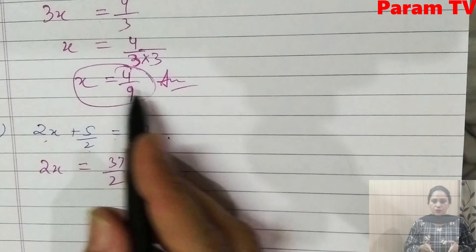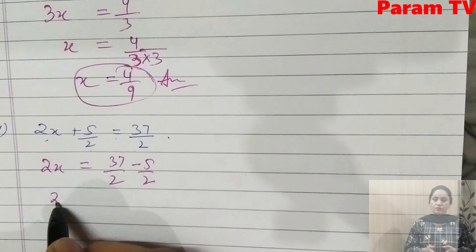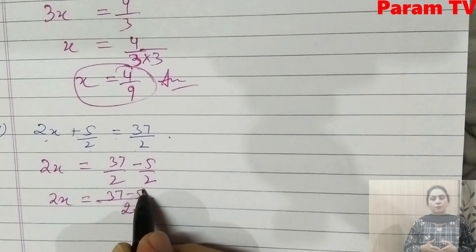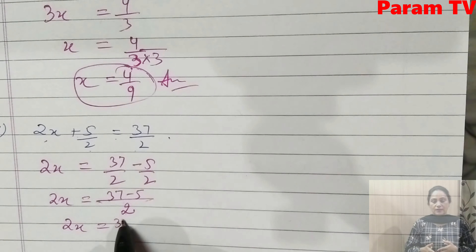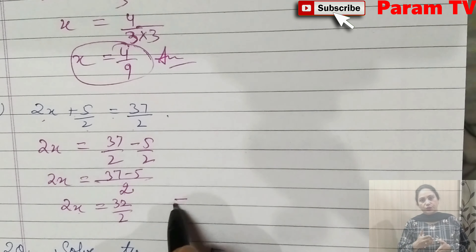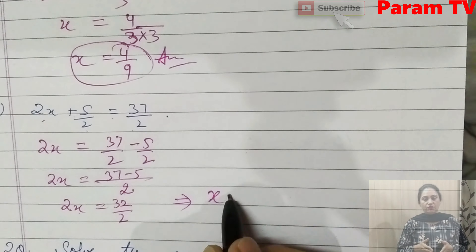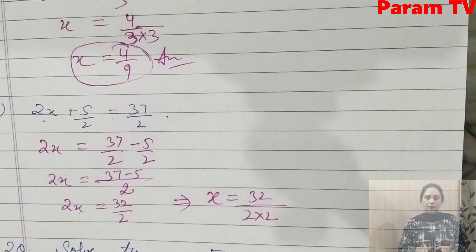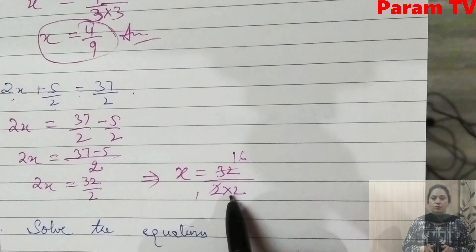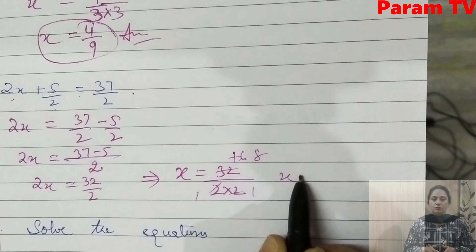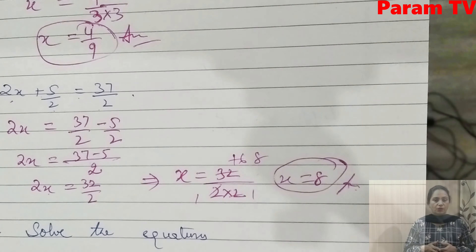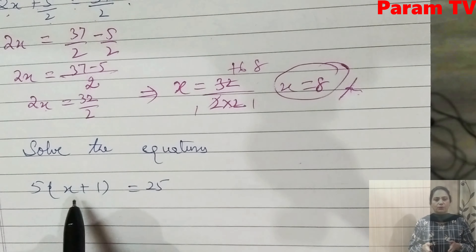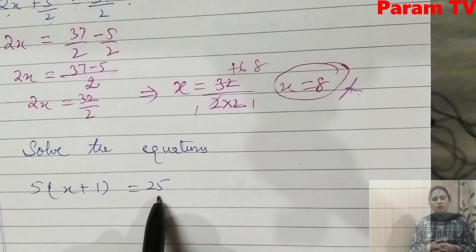Next is 2x + 5/2 = 37/2. So 2x = 37/2 - 5/2. Taking LCM, the denominator is 2: 2x = (37 - 5)/2 = 32/2. Now the 2 on the right cancels: 2x = 16. Then x = 16/2 — wait, 32/2 goes to the other side divided by 2, giving x = 8. So x = 8 is the answer.